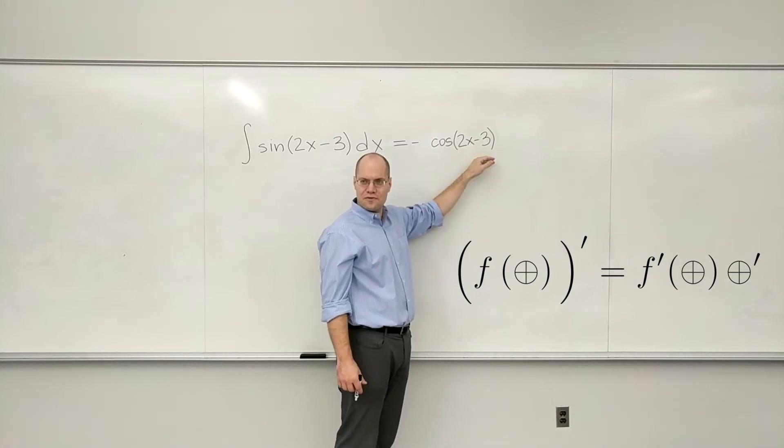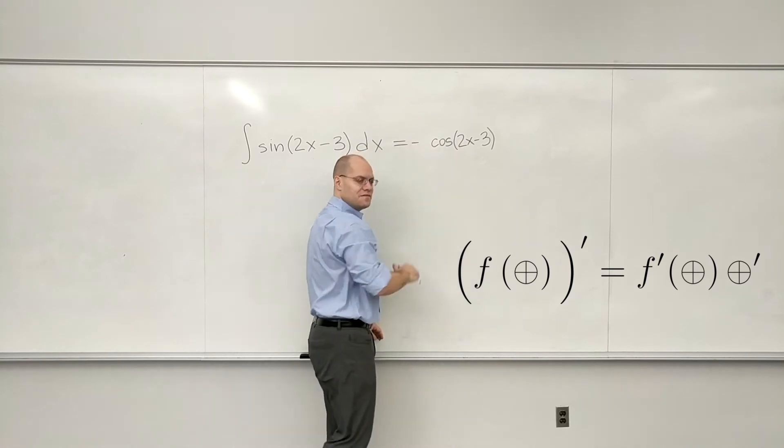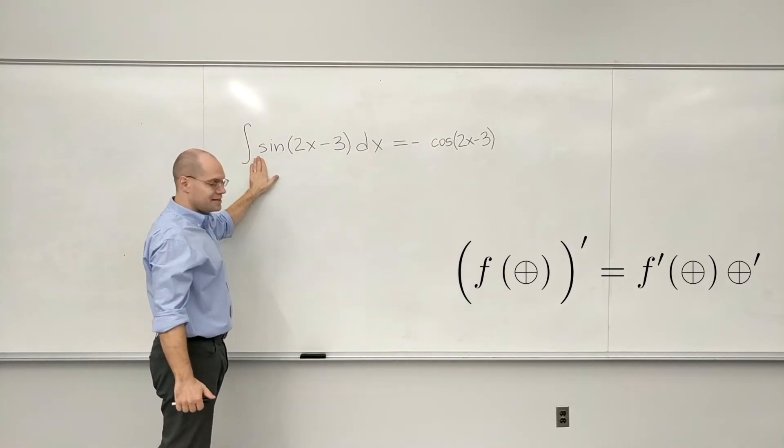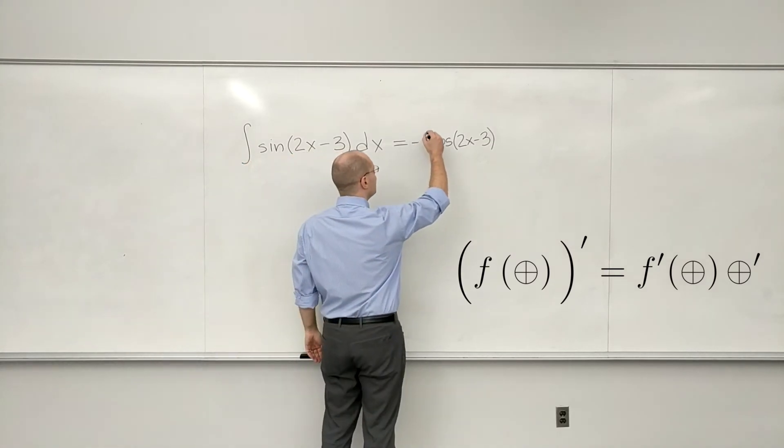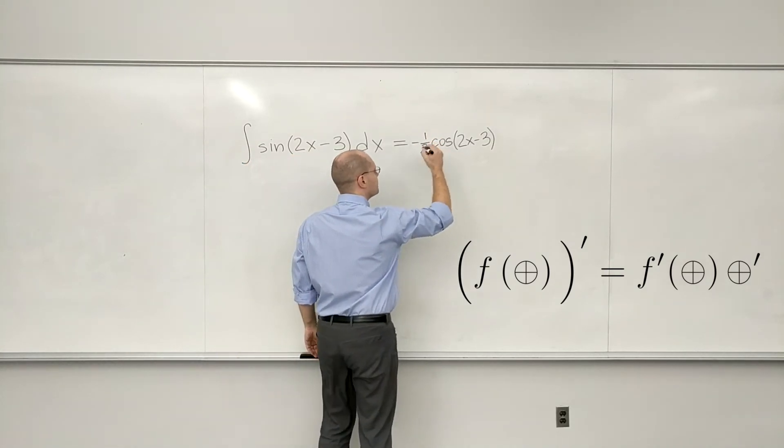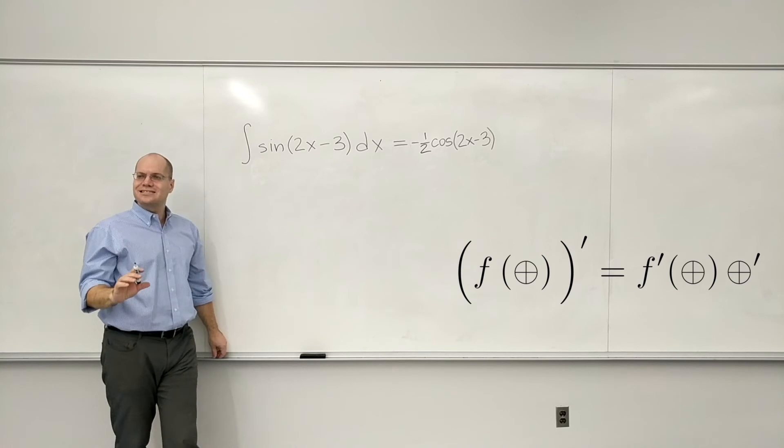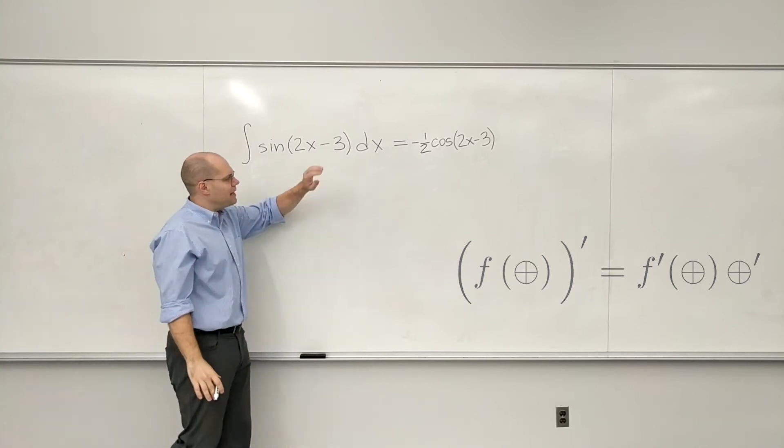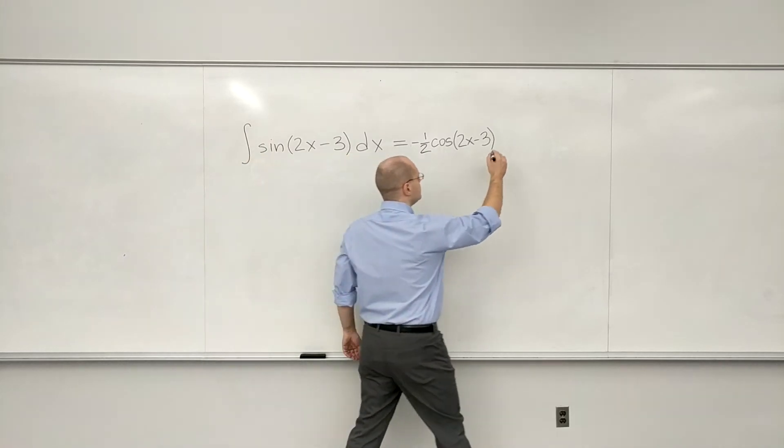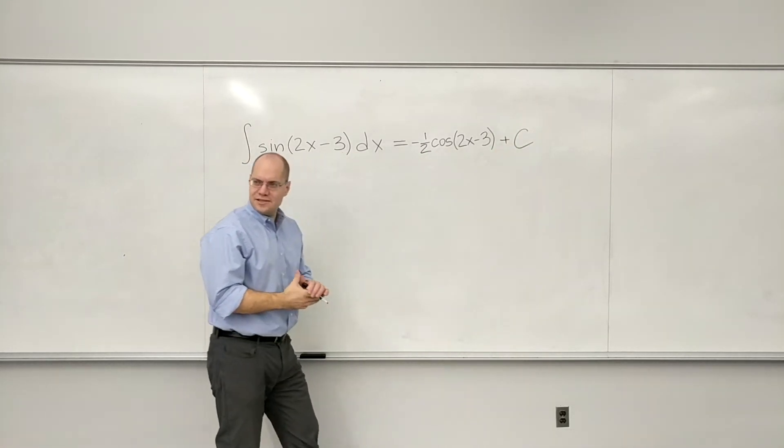So when we take the derivative of this, there would be an additional factor of 2 that's not in our target. So to make up for it, you need a 1 half. So it's the exact same thinking as last time, even if the pattern looks much simpler.